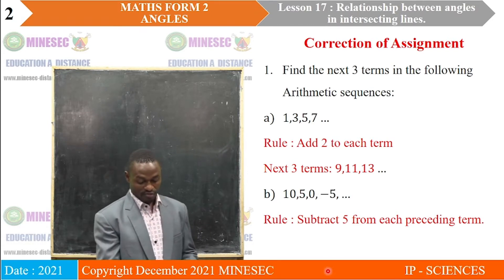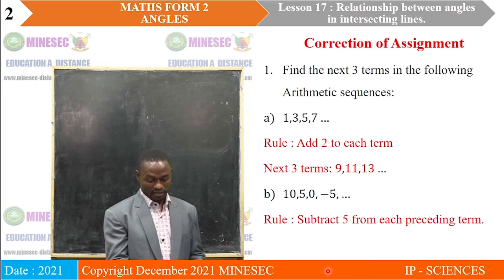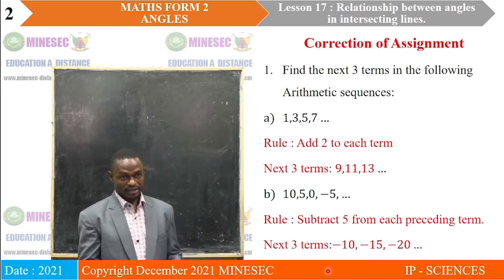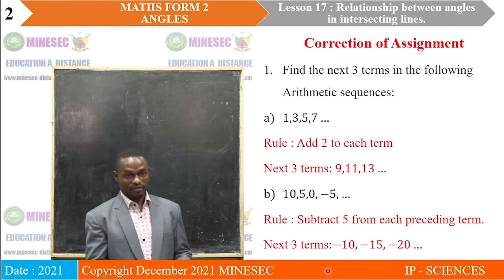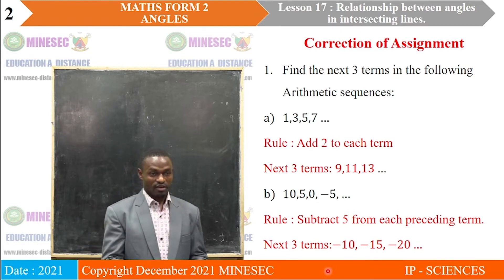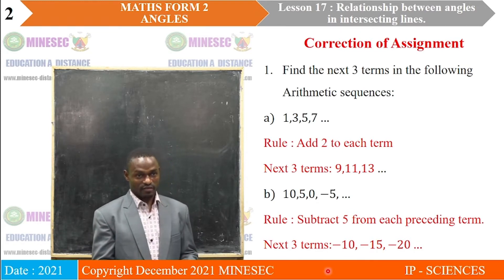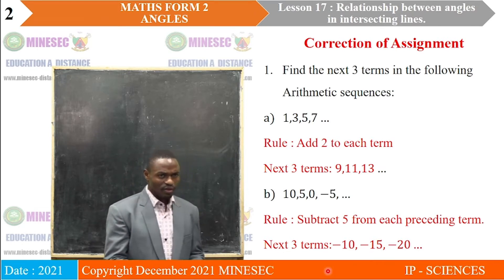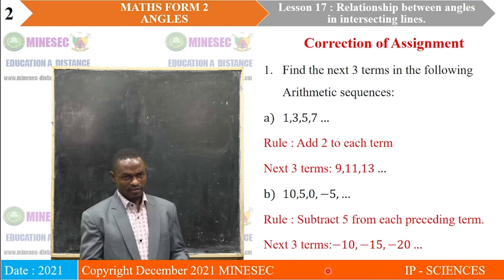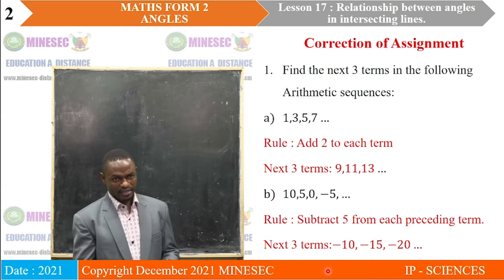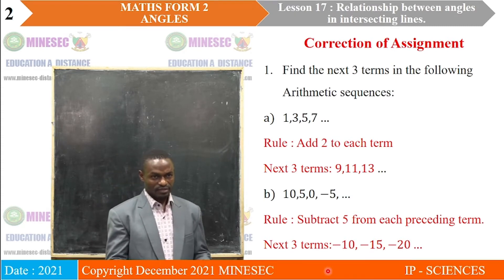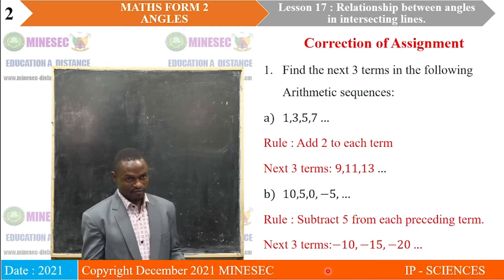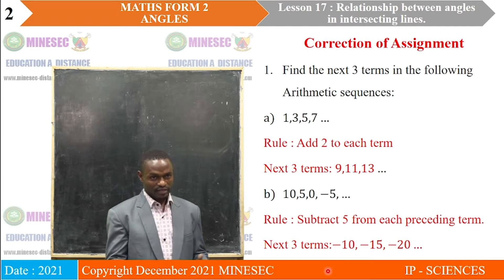Following this same rule, to get the next term, we subtract 5 from negative 5, and we obtain negative 10. If you subtract 5 from negative 10, you obtain negative 15. Similarly, subtracting 5 from negative 15, you have negative 20.